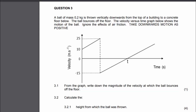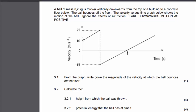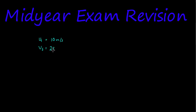Next, calculate the height from which the ball was thrown. We look at the first part of the motion, where we have an initial velocity, a final velocity, and acceleration in between. The initial velocity is 10 meters per second, the final velocity is 25 meters per second, and the acceleration is 9.8 meters per second squared.